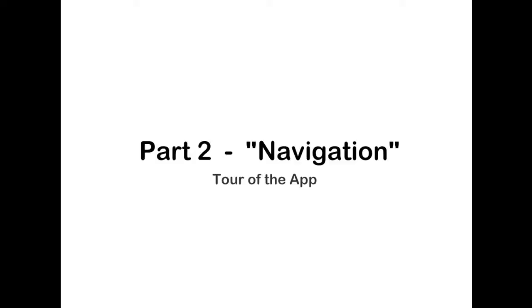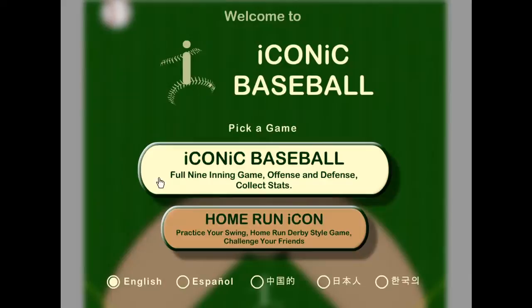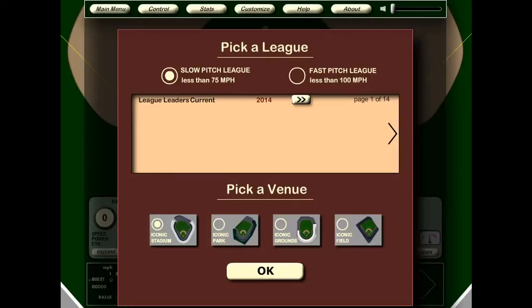Now that you know the basics, let's move on to navigation. You can always find Iconic Baseball by going to iconicbaseball.com. You play it as an app in Facebook, and that address is apps.facebook.com/iconicbaseball. When you first enter the app, the main screen appears. You can change the language at the bottom, and there are two buttons: a small button that takes you to Home Run Icon, and a big button that takes you to Iconic Baseball.